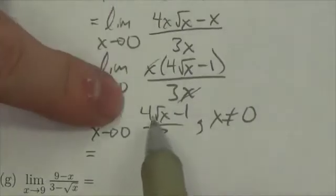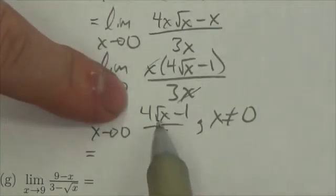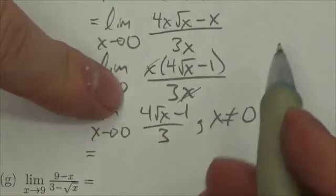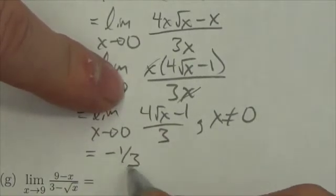And now plug in the zero. Four times root zero. Well root zero is zero. Four times zero is zero. Minus 1 over 3. The answer is negative 1 third.